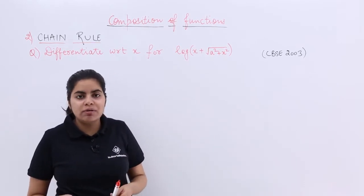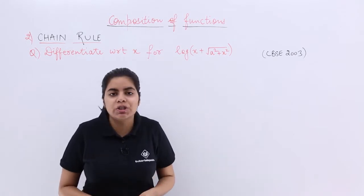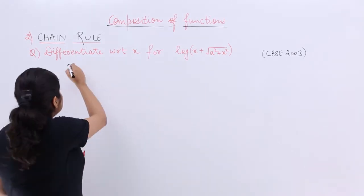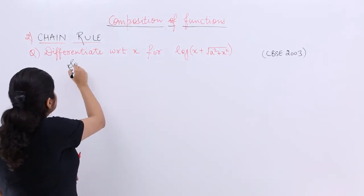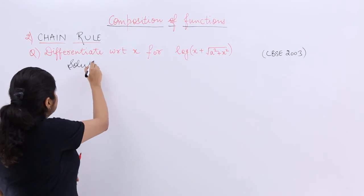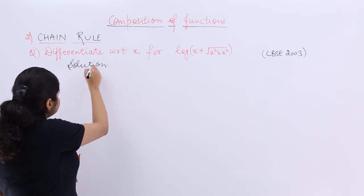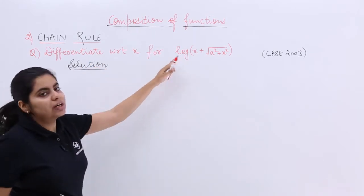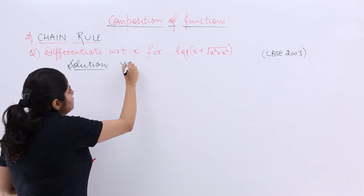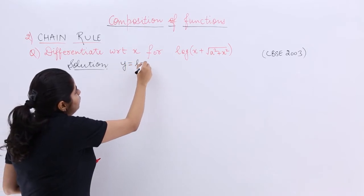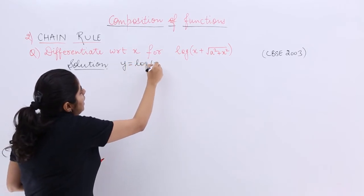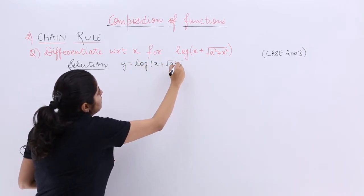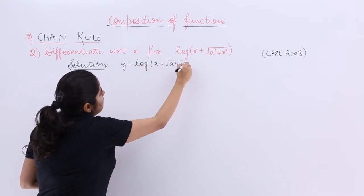If you still don't understand what chain rule is, let's start with the solution. Let's write the heading as 'Solution' and name the function: let y = log(x + √(a² + x²)).